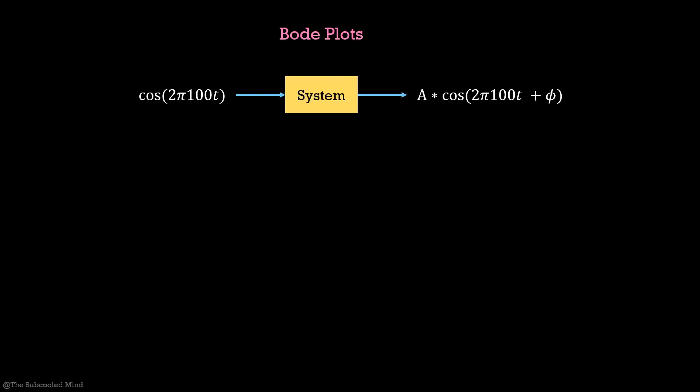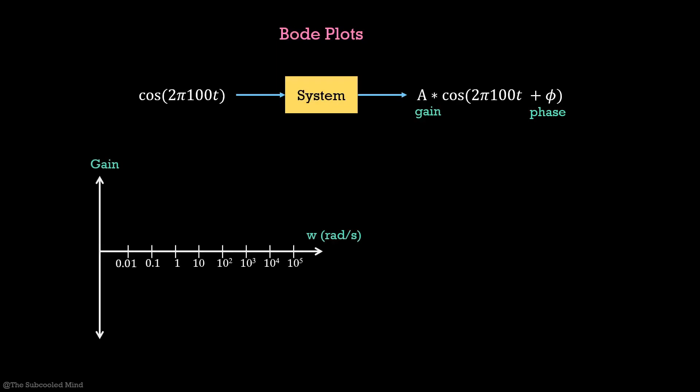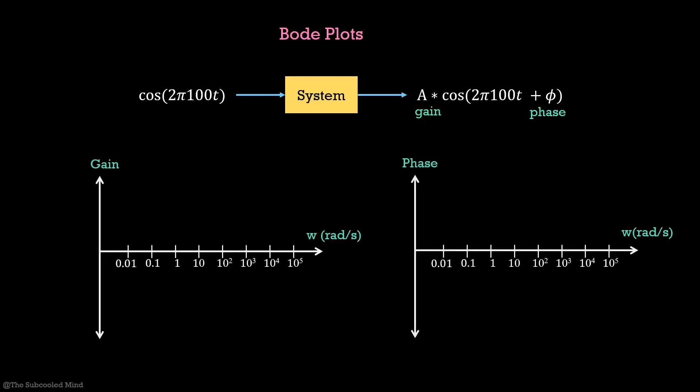Bode plots help us understand how a system responds to a particular frequency. For example, we pass a 100 Hz signal through a system and we might see a change in the gain and in the phase of the signal. A Bode plot tells us exactly that with the help of a gain vs. frequency and a phase vs. frequency plot across the entire frequency spectrum.